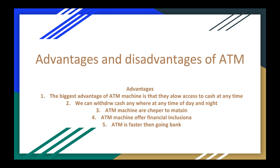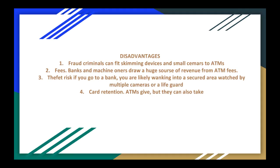5th ATM is faster than going to the bank. Disadvantages: 1st Fraud — criminals can attach skimming devices and small cameras to ATMs. 2nd Fees — banks and machine owners draw a huge source of revenue from ATM fees. 3rd Theft Risk — if you go to a bank, you are likely walking into a secured area watched by multiple cameras or a lifeguard. 4th Card Detention — ATMs give but they can also take.